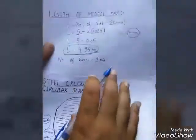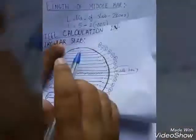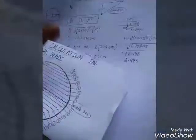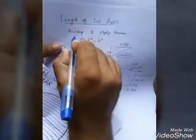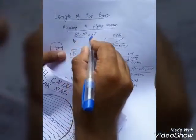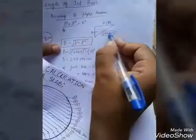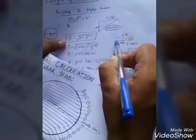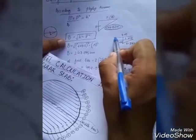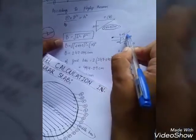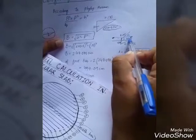The number of middle bars is only one, since there is only one middle bar. Now to find the length of the first bar we use the Pythagorean theorem: base squared plus perpendicular squared equals hypotenuse squared. The length of the middle bar is 4.95 meters, so half of that is 2.475 meters.